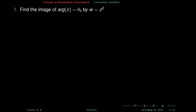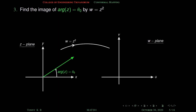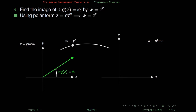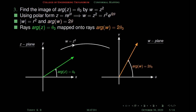Find the image of arg(z) equal to θ₀, where θ₀ is a constant. The set arg(z) equal to θ₀ is a ray starting from the origin; any point on this ray has argument θ₀, while points on the opposite ray have argument π + θ₀. Using polar form z equal to r·e^(iθ), we get w equal to z² equal to r²·e^(i·2θ). So arg(w) equal to 2θ. Therefore the ray arg(z) equal to θ₀ is mapped to the ray arg(w) equal to 2θ₀.